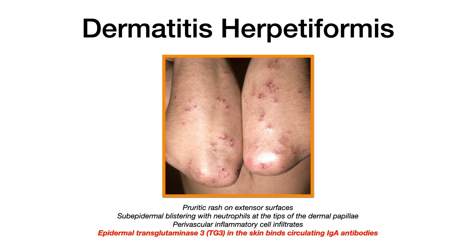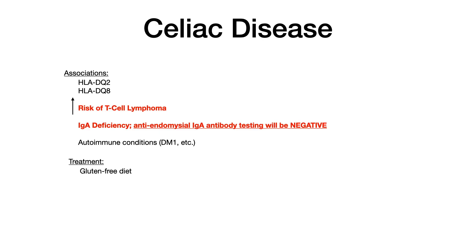It's called herpetiformis because it can look as if it is herpes — herpetiformis meaning looking like herpes — but of course it's not HSV. It's a rash associated with celiac. So if you see this on your exam, the test writer wants you to pick celiac.